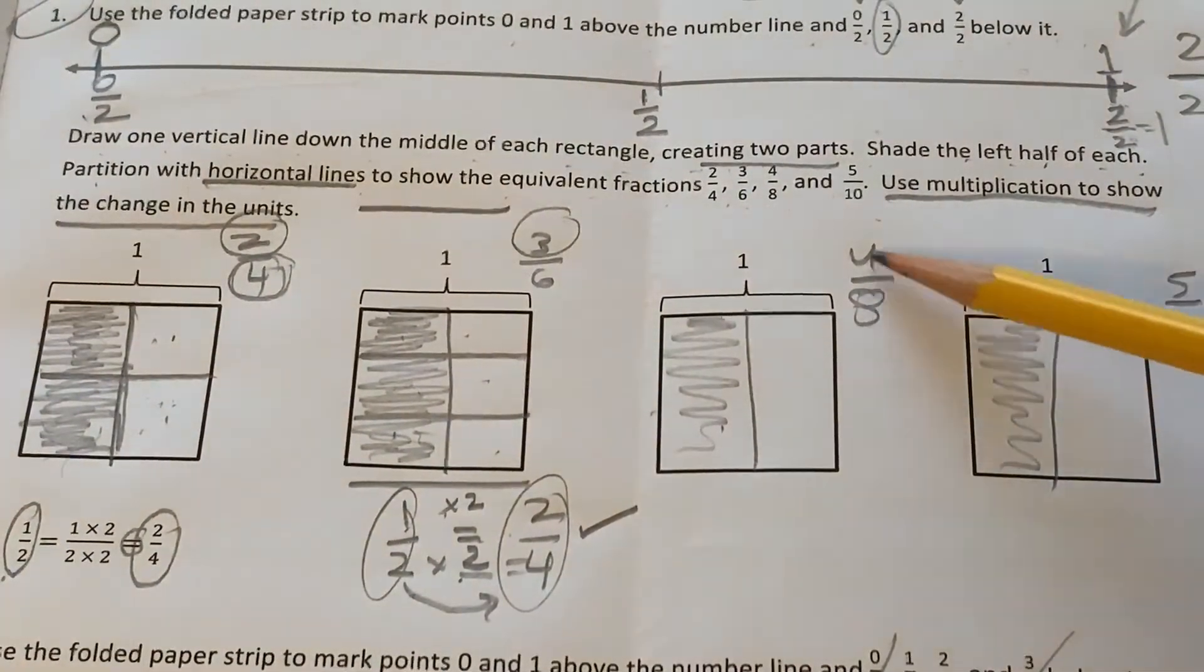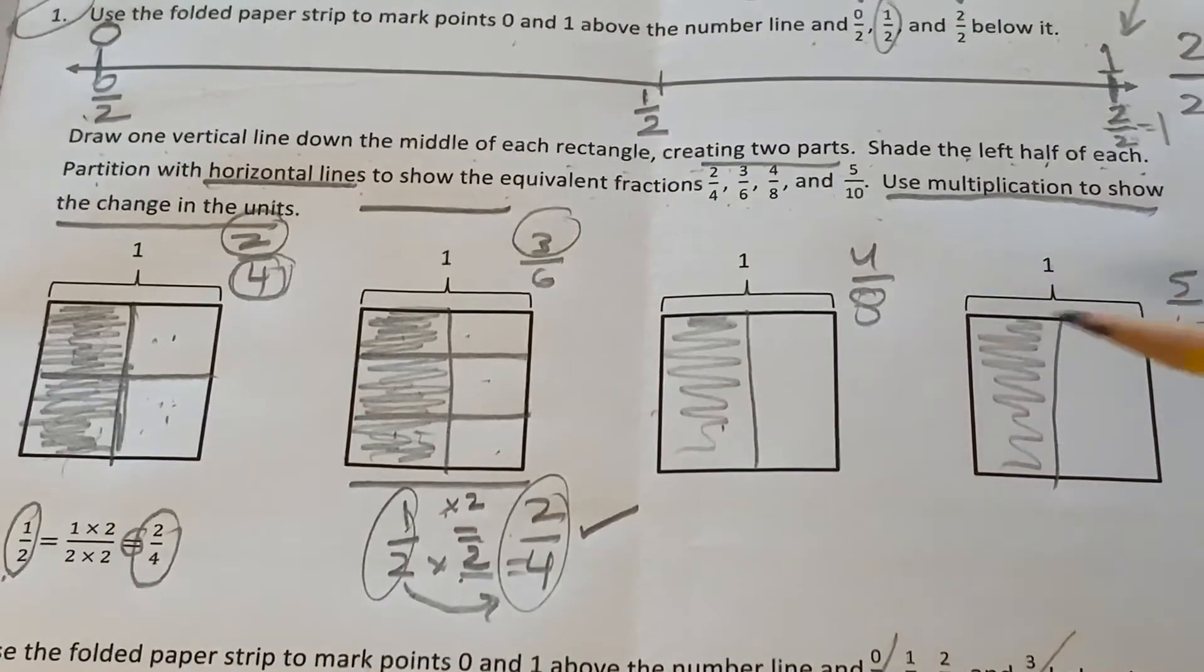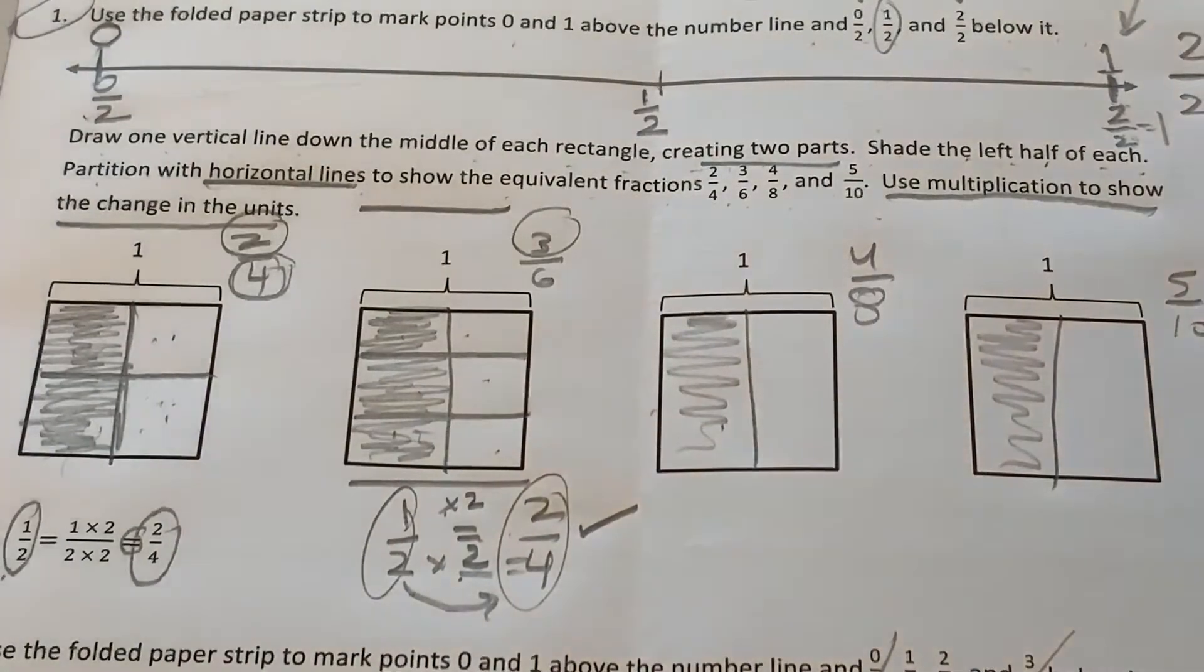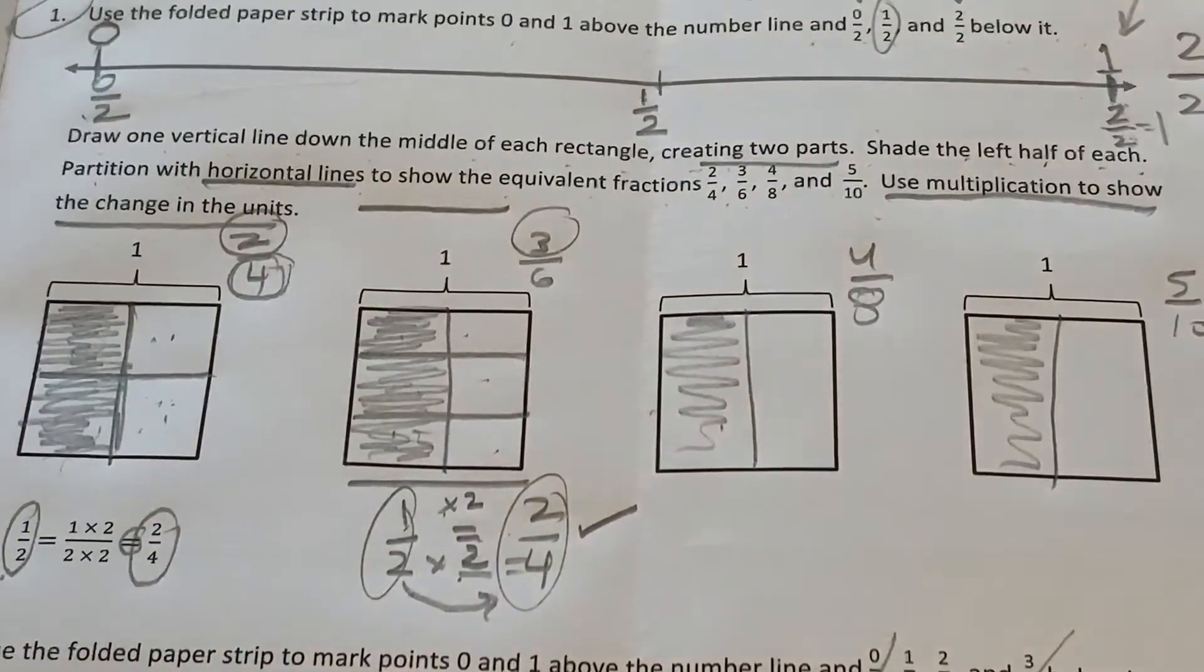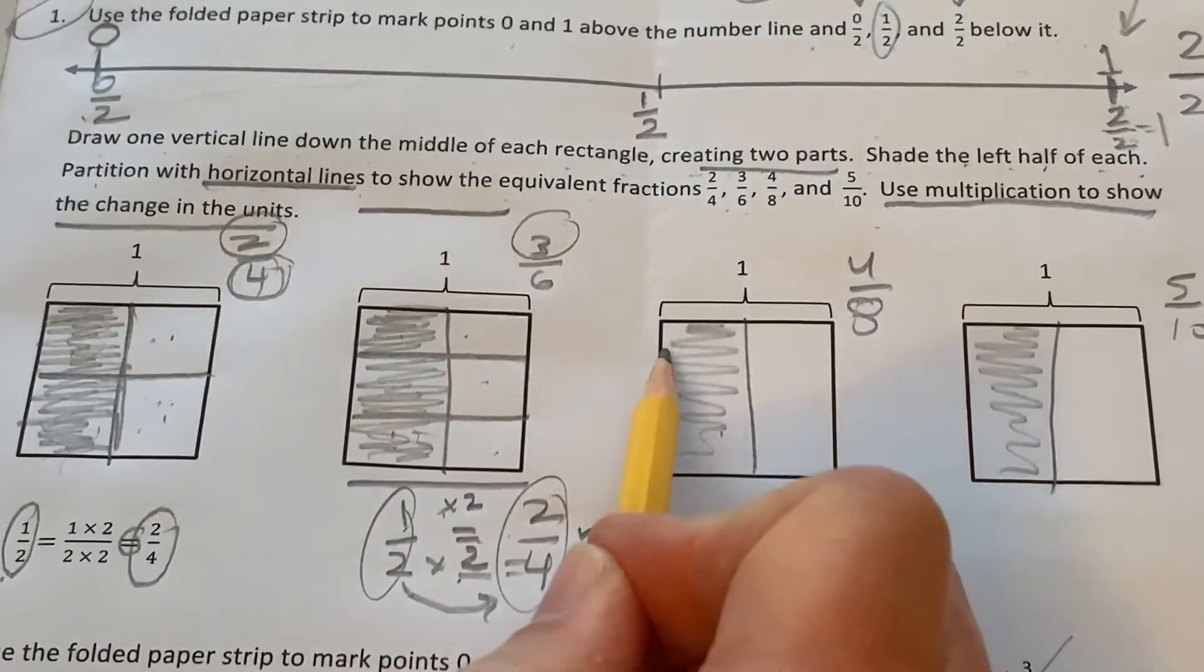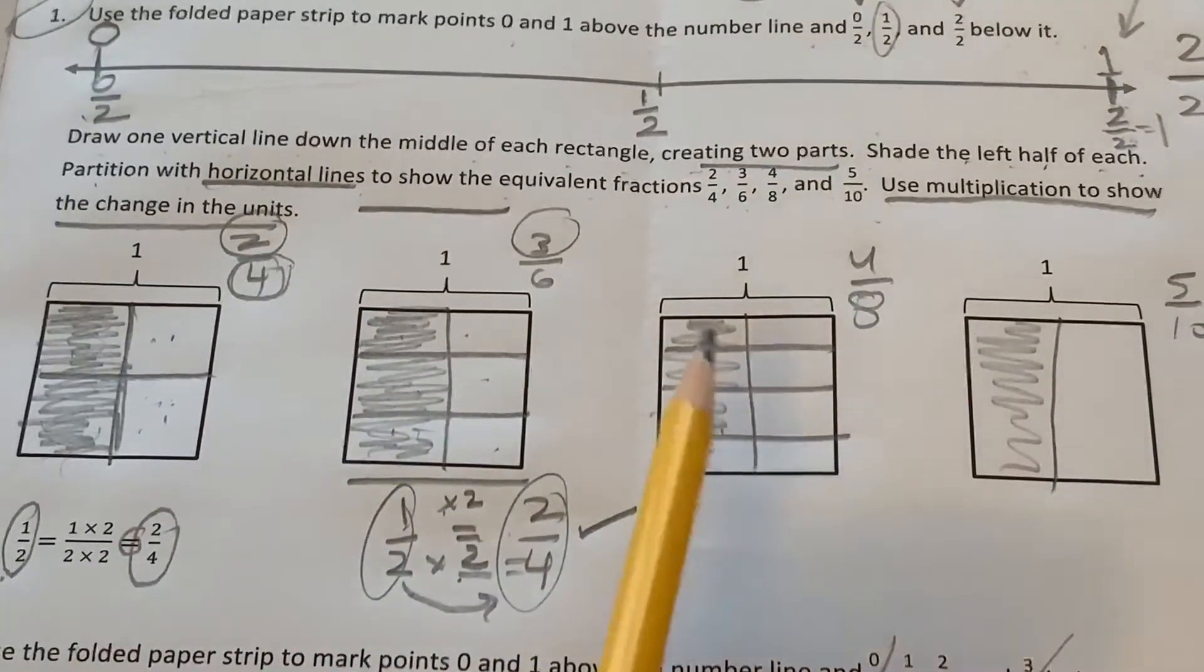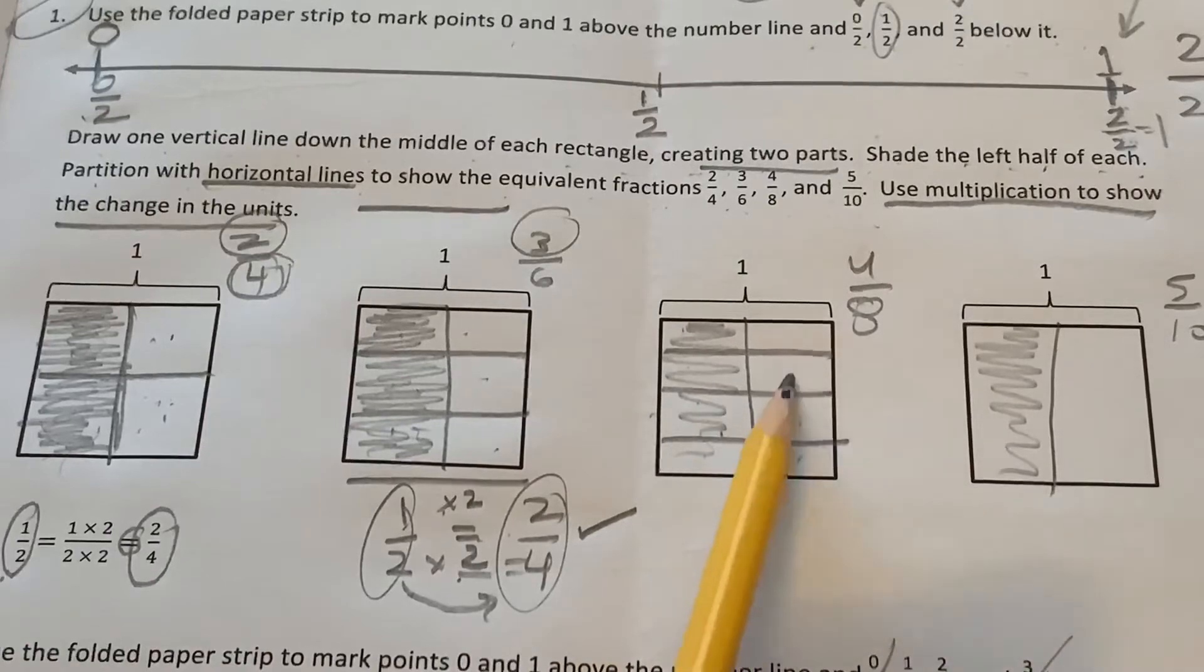Okay, do the next one. How can you divide it horizontally so there's eight boxes? That's right, you have to draw three horizontal lines. One, two, three. Let's make sure there's eight boxes. One, two, three, four, five, six, seven, eight. Yep.